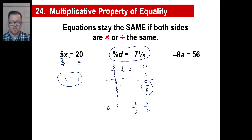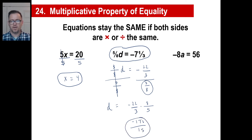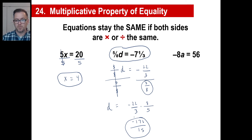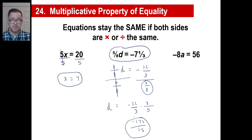Negative 22 times eight is 176. Three times five is 15. So our answer is negative 176 over 15. That's a kind of complicated-looking answer, but it's not — it's just a fraction. You just did arithmetic and figured out what it was.